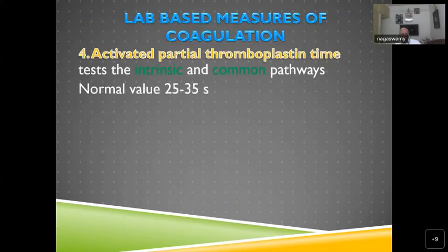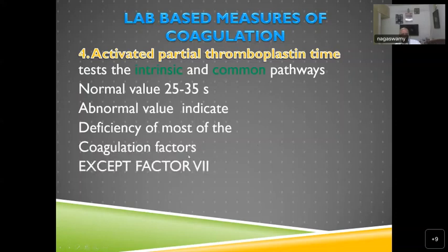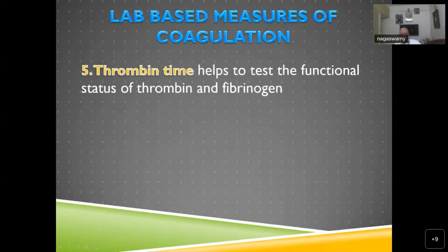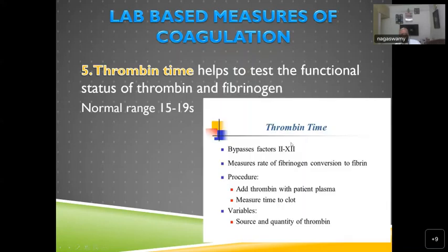Abnormal APTT indicates deficiency of most coagulation factors except factor 7. For APTT, take citrated plasma and add calcium, kaolin, and phospholipid. Thrombin time tests the function and status of thrombin and fibrinogen; normal range is 15 to 19 seconds. Thrombin time bypasses factors 2 through 12 and measures the rate of fibrinogen conversion to fibrin. Procedure: add thrombin to citrated plasma and measure time to clot.